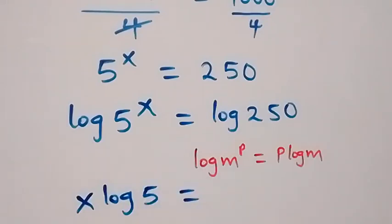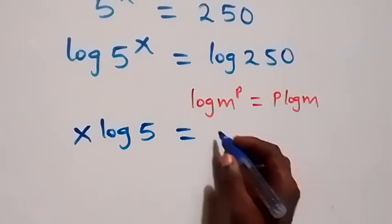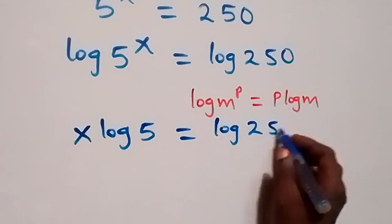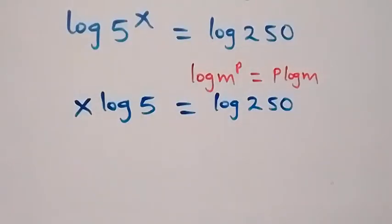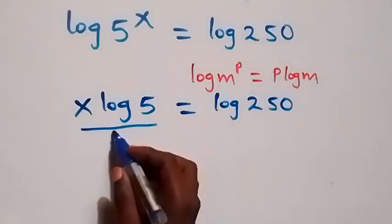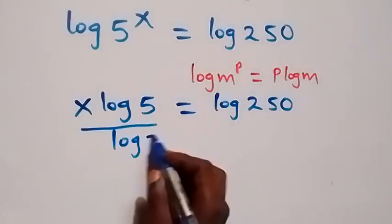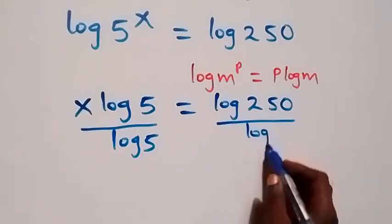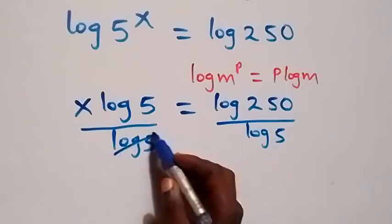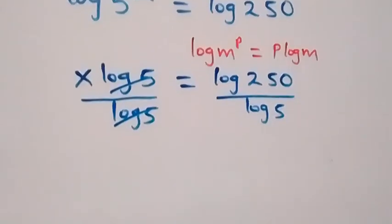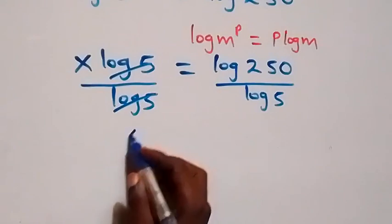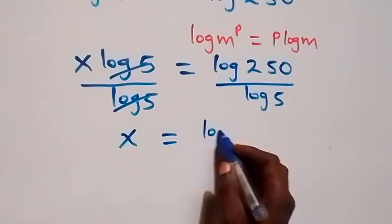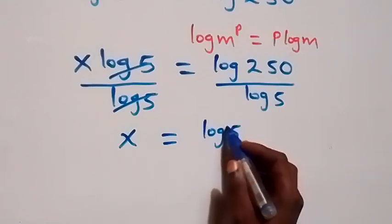So x·log(5) equals log(250). The next step: we divide both sides by log(5). The log(5) terms cancel each other, and what we have left is x equals log(250) over log(5).